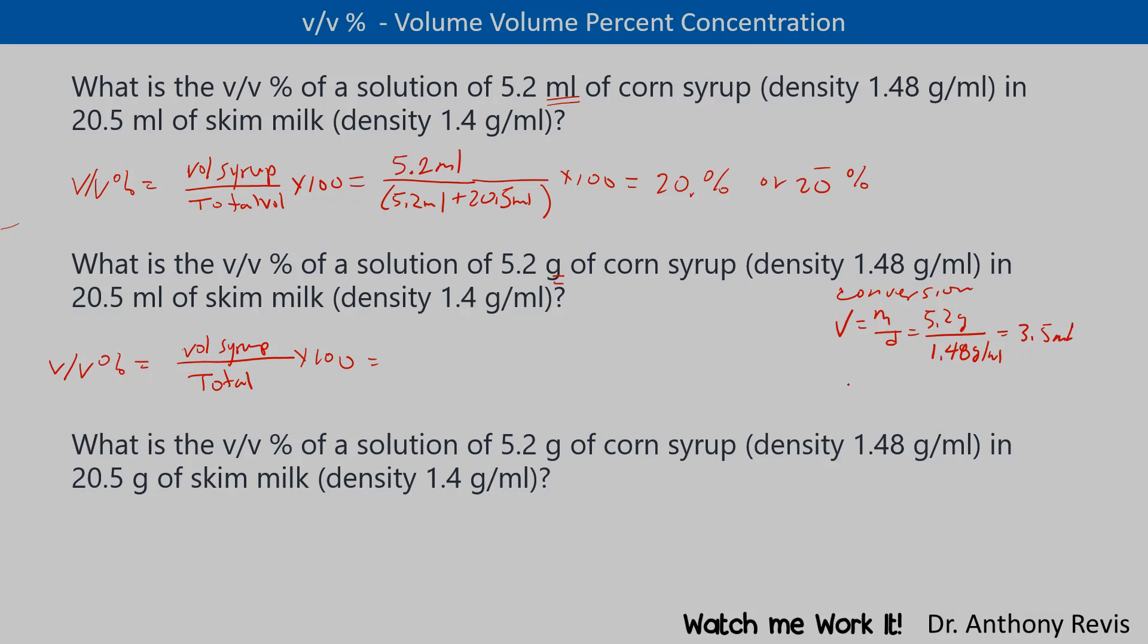We can also do this by dimensional analysis: 5.2 grams times the conversion from grams to mils. And you'll get the exact same answer. You have 1.48 grams per every one mil, and we get 3.5 ml.